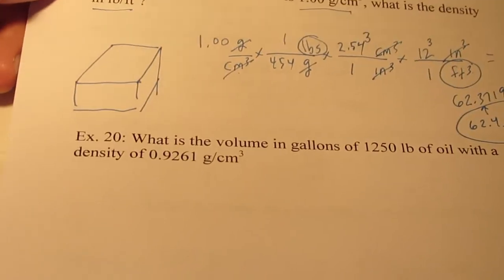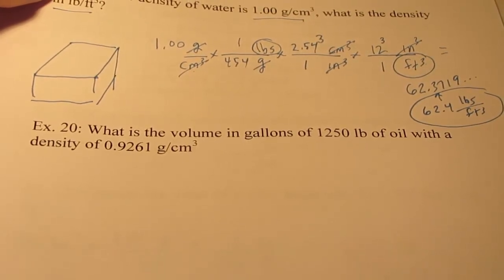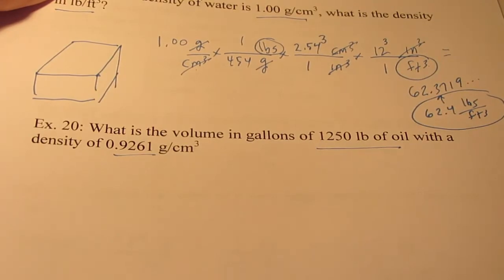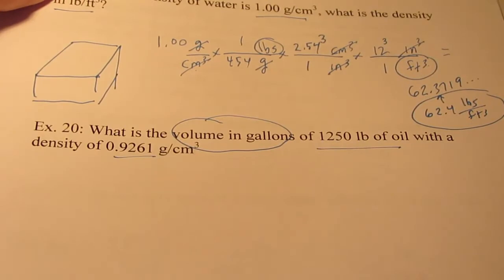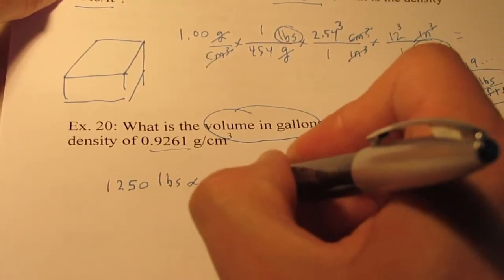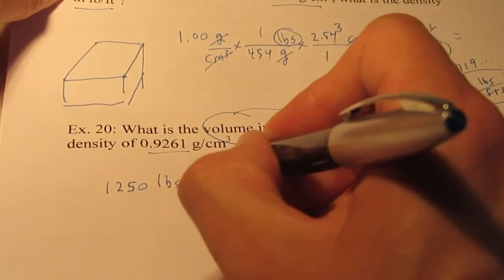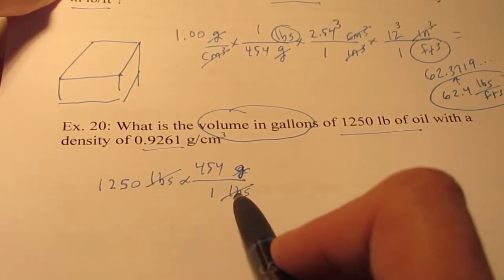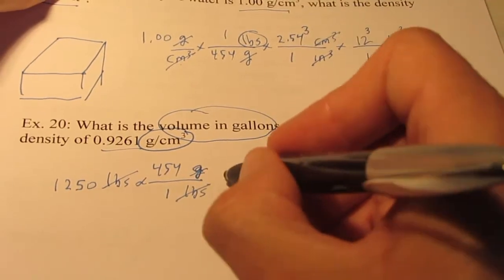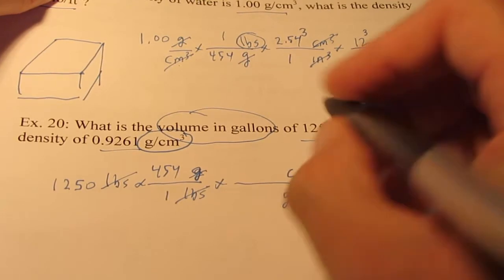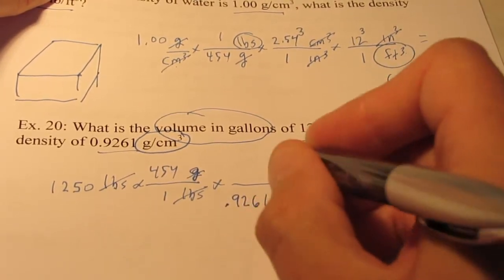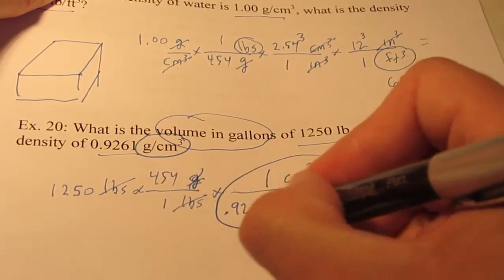Let's do one more. If I have 1250 pounds of oil and the density is 0.9261 grams per cubic centimeter, what's the volume in gallons? I'm going to start with 1250 pounds and go from pounds to grams. One pound is 454 grams. I want to use my density as a conversion factor. I want to go from grams to cubic centimeters: 0.9261 grams per cubic centimeter. You notice I've used density as a conversion factor again.